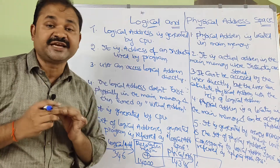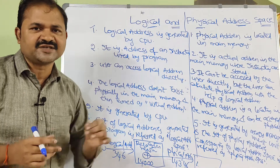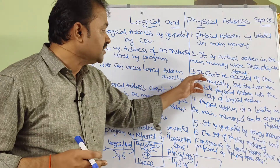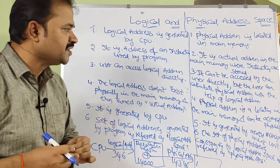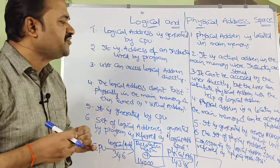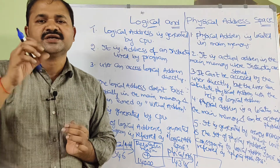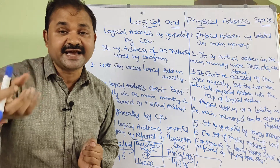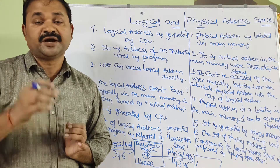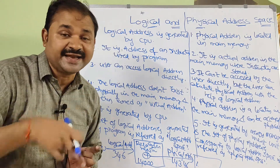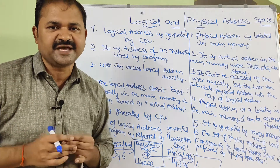The user can access the logical address directly, but physical address cannot be accessed by the user directly. However, the user can calculate the physical address with the help of the logical address. The reason is that logical address means a program address, but the user cannot access main memory directly — only the operating system and CPU can access main memory.